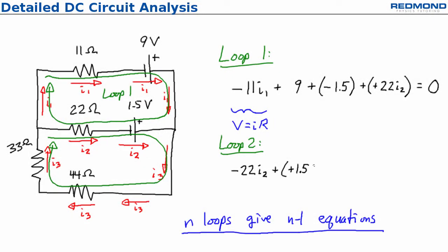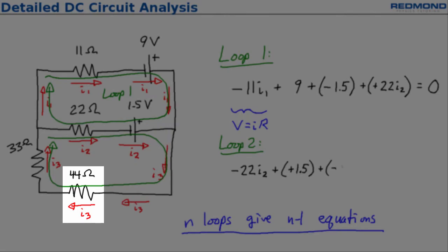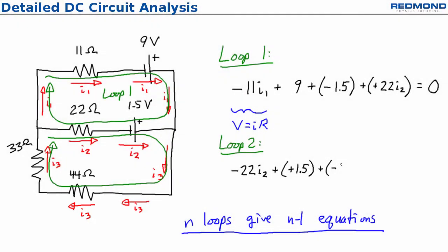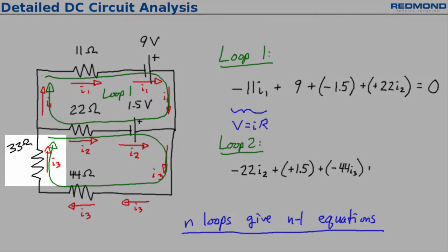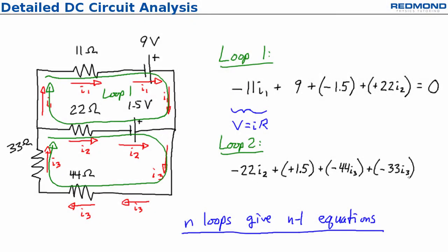Next, I reach the 44 ohm resistor going with the current I3, so I subtract 44I3 and do the same with the 33 ohm resistor before reaching the starting point. This equation is negative 22I2 plus 1.5 minus 44I3 minus 33I3 is equal to 0.